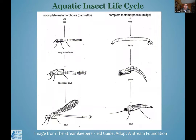These creatures generally go through a transition and metamorphosis. Some go through incomplete metamorphosis and some through complete — essentially one goes through four stages between egg and adult, and the other goes through three stages. Typically what we're finding in the stream is the larval stage.